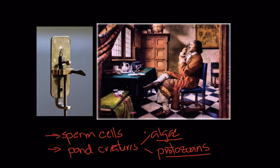Leeuwenhoek also saw single cells, which he didn't know what they were — he was calling them animalcules, which we now know were sperm cells in semen. He also discovered bacteria in just about everything he looked at, especially in things that were decomposing, like spoiling broth and souring milk. He did not use the words bacteria, algae, or protozoans — he called them animalcules.